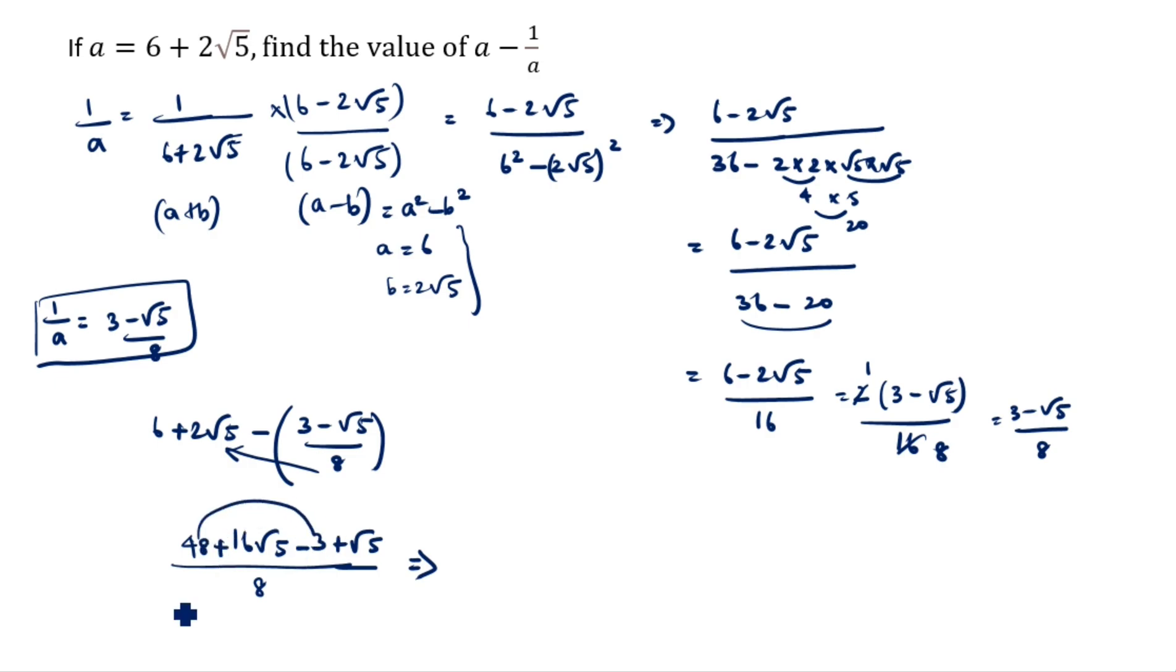48 minus 3 is 45, 16 root 5 plus root 5 is plus 17 root 5 divided by 8. So a minus 1 by a value is 45 plus 17 root 5 divided by 8. This is the answer.